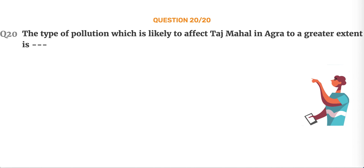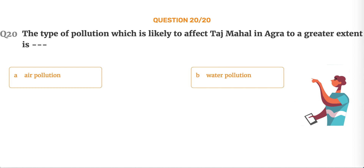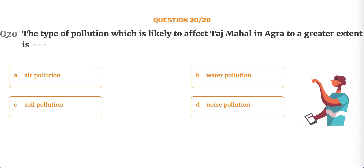Question number 20. The type of pollution which is likely to affect the Taj Mahal in Agra to a greater extent is: Option A, Air pollution. Option B, Water pollution. Option C, Soil pollution. Option D, Noise pollution.